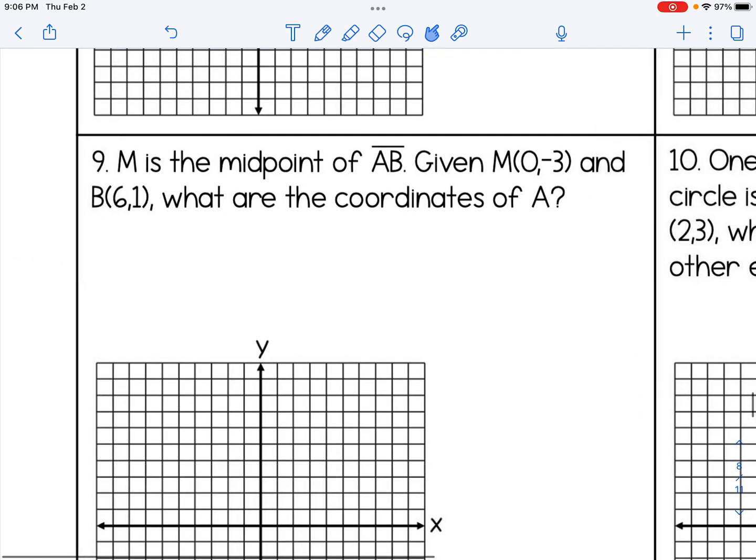For number 9, M is the midpoint of AB. M is (0, -3) and B is (6, 1). What are the coordinates of A? So I'm going to use a third method now, which is solving algebraically. And the way I start that out is I'm going to really write two equations. The first one is going to be finding the x, and the next one is going to be finding the y's.